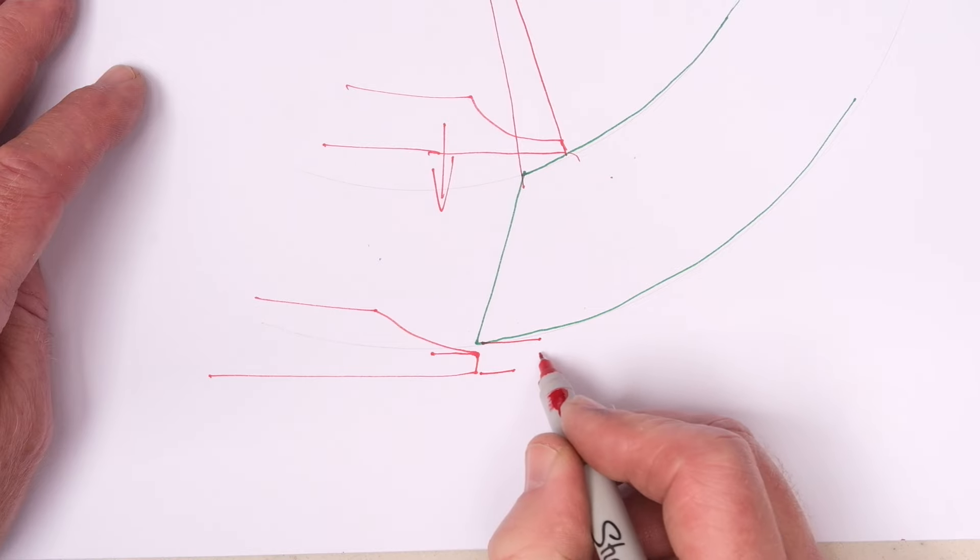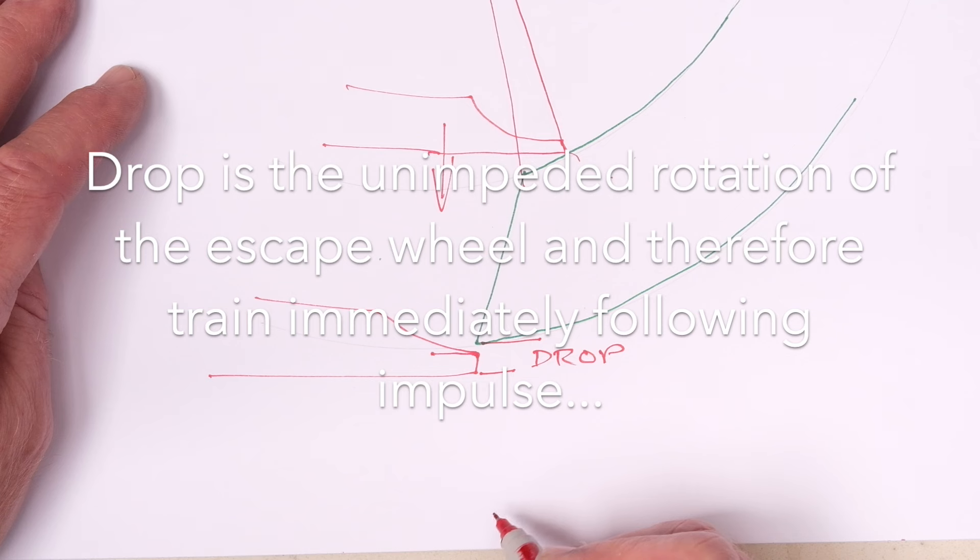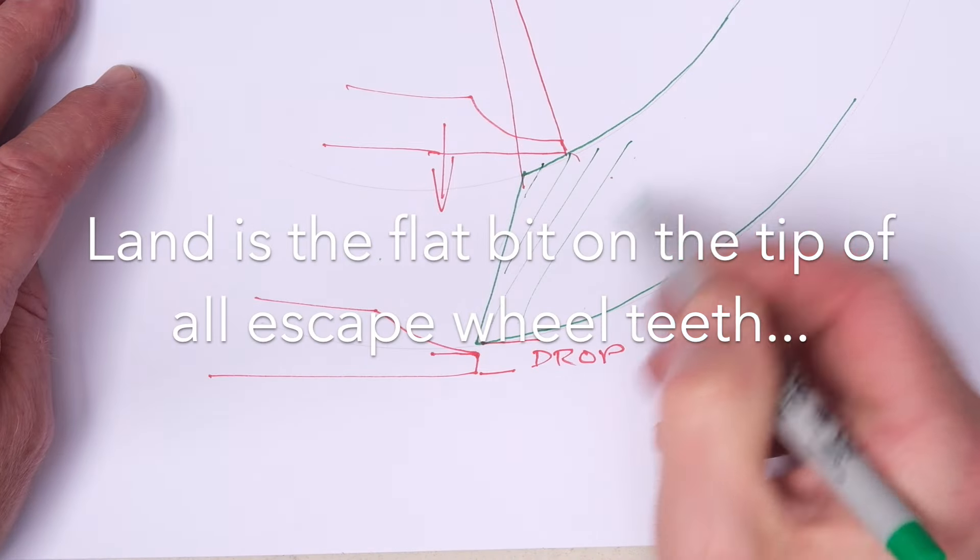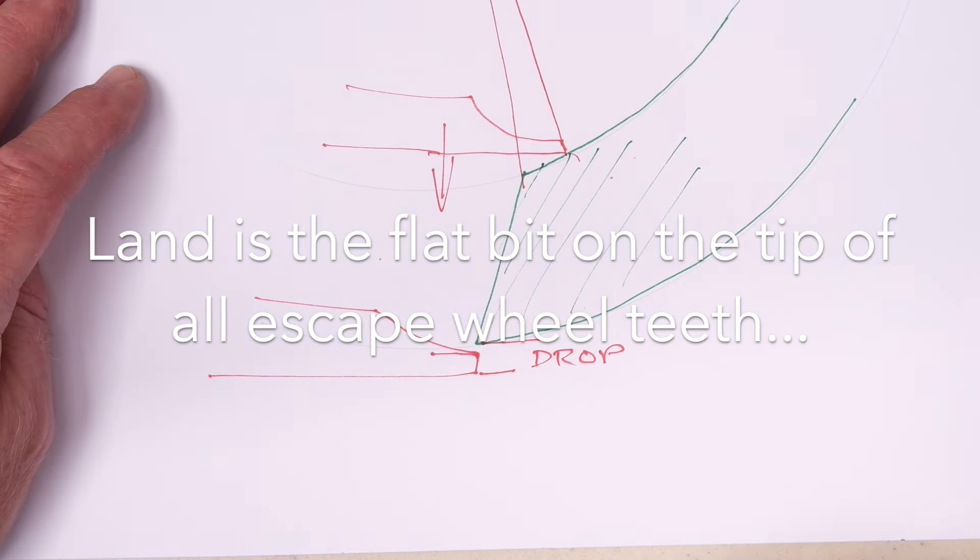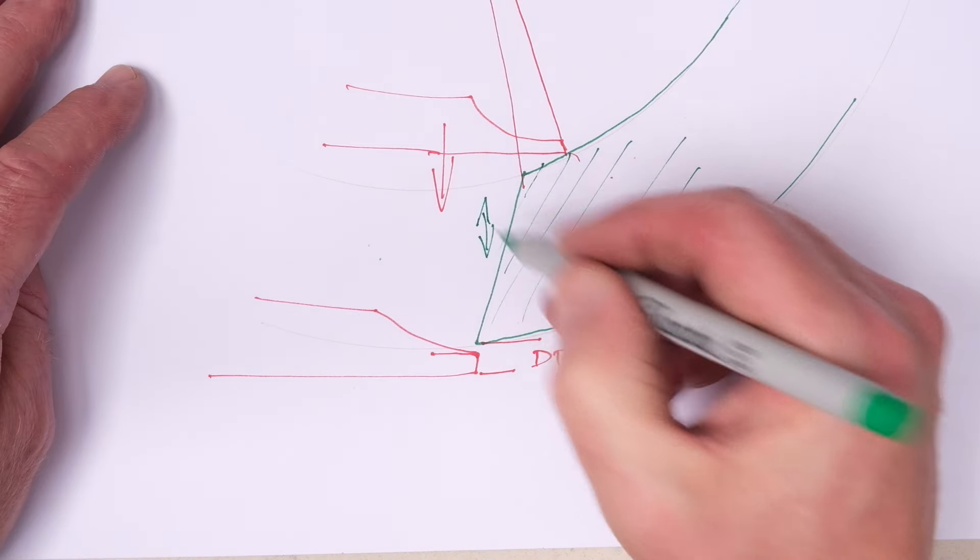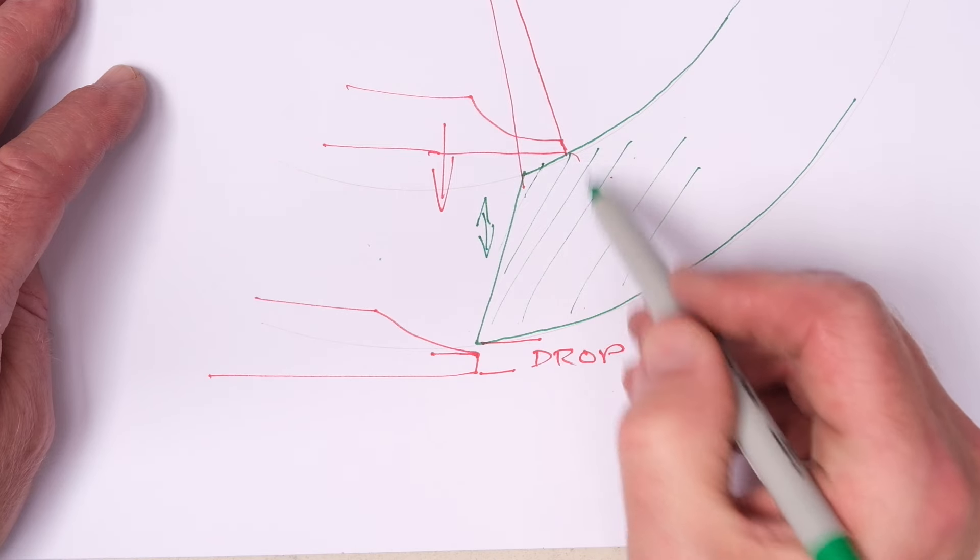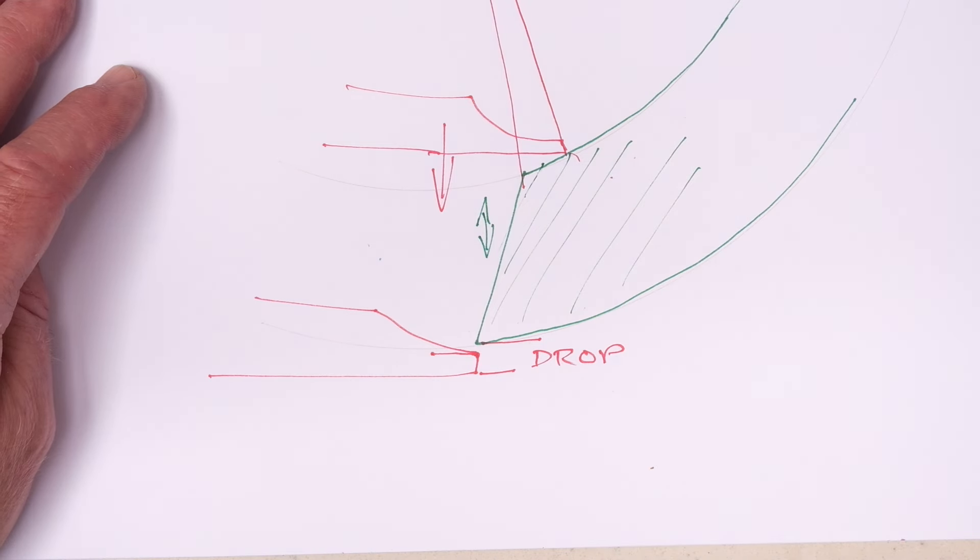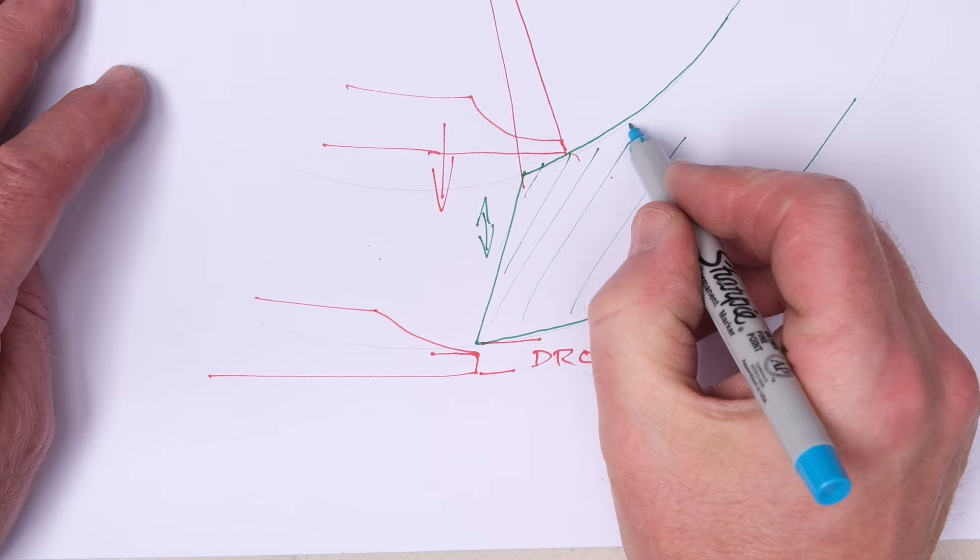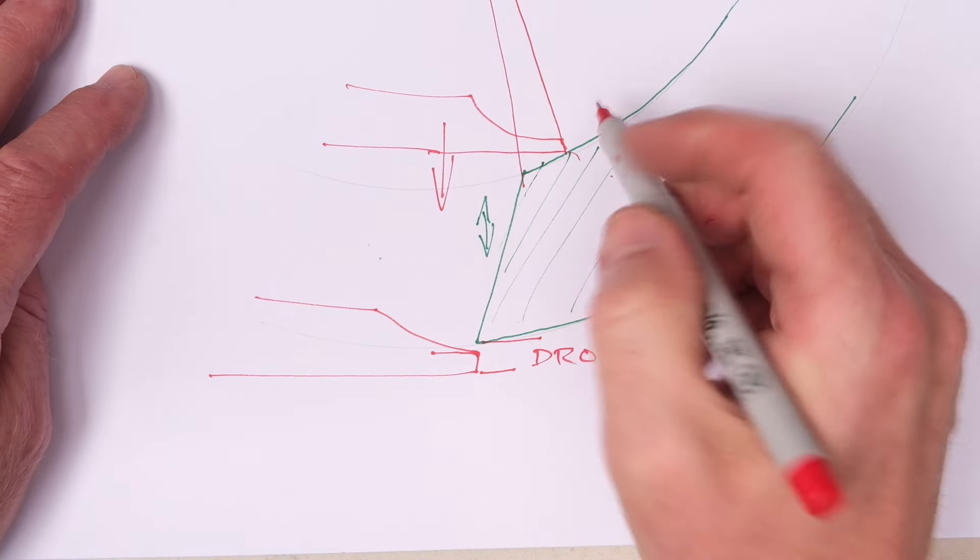I'm going to just talk a little bit about drop because drop in the deadbeat escapement is often misunderstood I think. So if we look at the thickness of the pallet or the depth of the pallet and the inevitable sort of land on the end of the escape wheel tooth, we can see that a certain amount of drop is necessary.